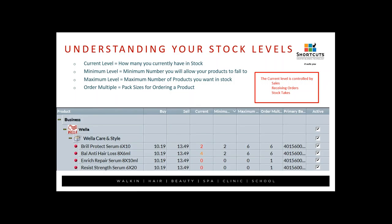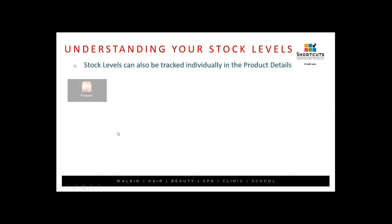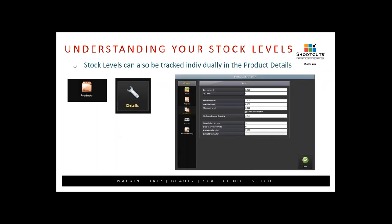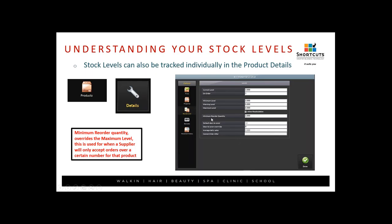The Order Multiple is used when suppliers provide pack sizes — for example, if they always supply in packs of six, even if you only needed three, Shortcuts would automatically order you back up to six. Stock levels can also be tracked individually in the product Details tab. Click on a product, then Details, and you'll see a Product Details box giving all level information for that individual product.